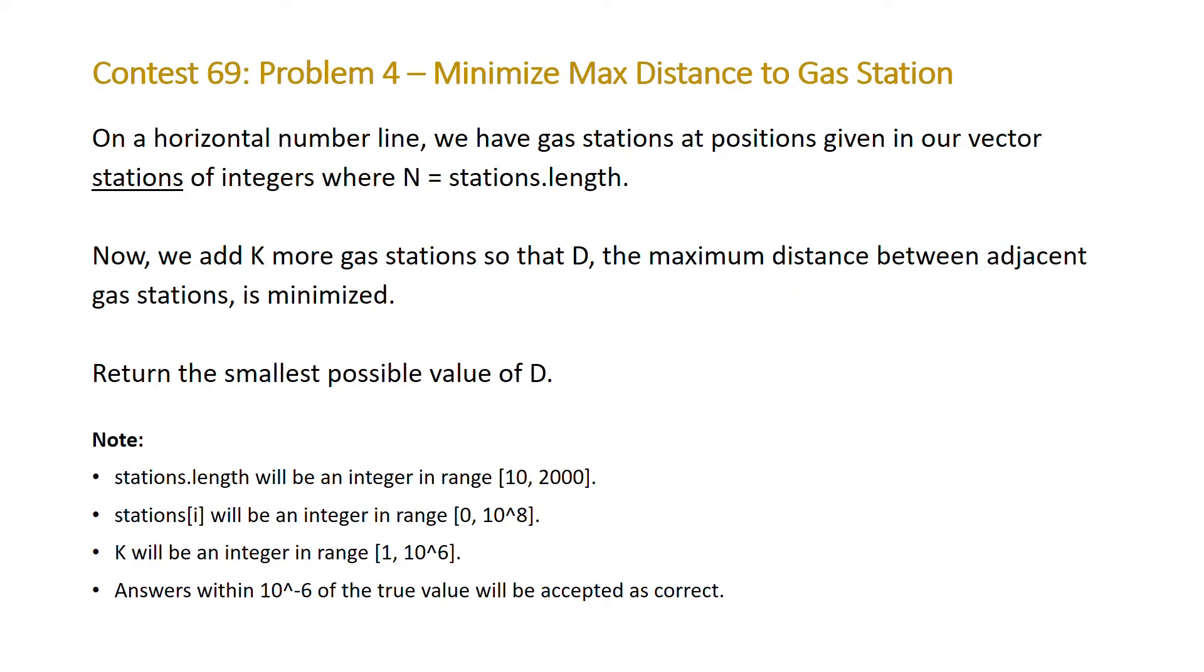Our problem states: on a horizontal number line, we have gas stations at positions given in our vector stations of integers, where n equals the length of that vector. Now we add k more gas stations so that d, the maximum distance between adjacent gas stations, is minimized, and the problem asks us to return the smallest possible value of d, that maximum distance.